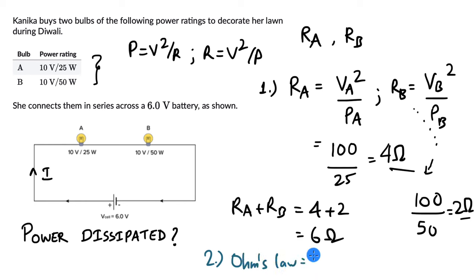Ohms law is V that is equal to IR. If we need to figure out the current, I is equal to V by R. So I, this is equal to V by R and this is 6 divided by 6, 1 ampere. So, 1 ampere of current is passing through A and 1 ampere of current is passing through B. Now, we know the individual resistances. We know the current passing through it.